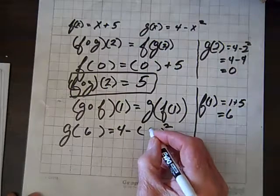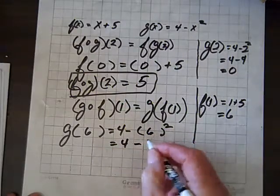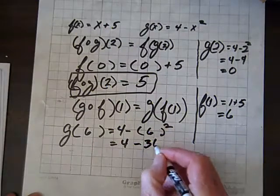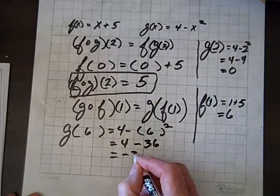If I put a 6 there, I must put a 6 there. And so, now we have 4 minus, and 6 squared is 36,